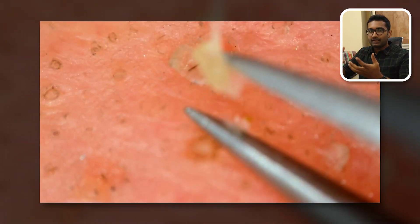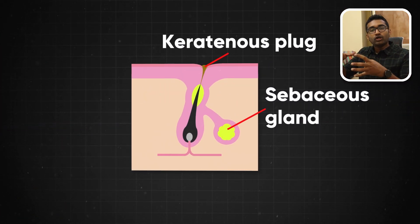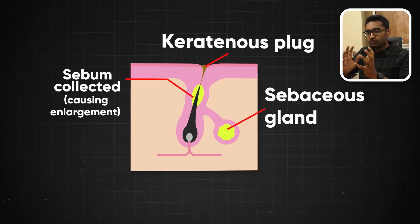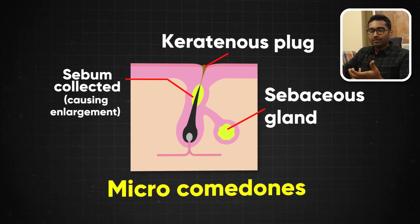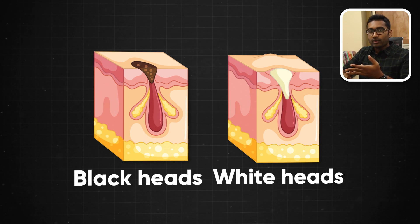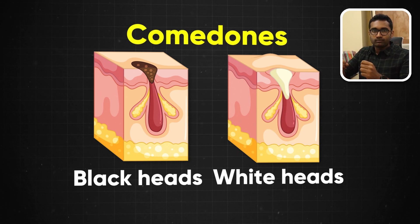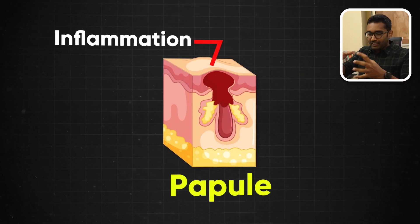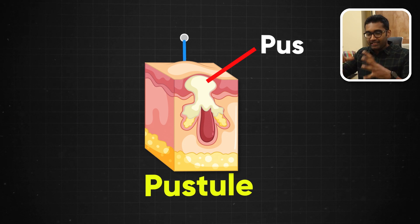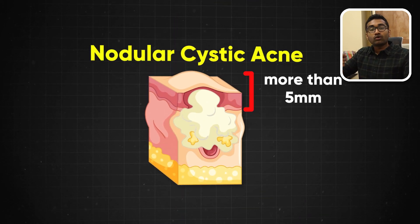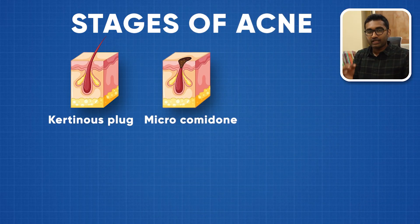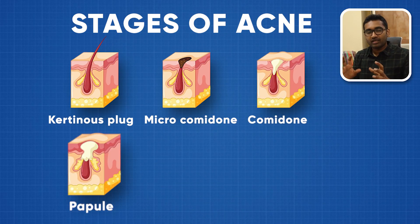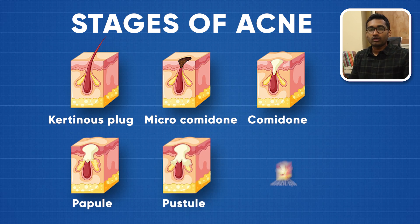This early keratinous plug is called a micro-comedone — you cannot see it with the naked eye. As the plug fills and the dermal follicular unit becomes blocked, it is called a comedone: blackheads, whiteheads, and open pores are all comedones. The bacteria then produce inflammation, forming a papule, then a pustule, and in severe cases nodular cystic acne.